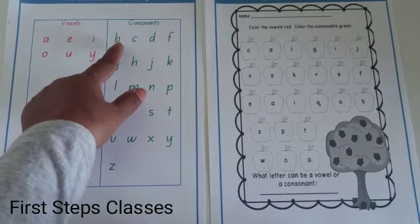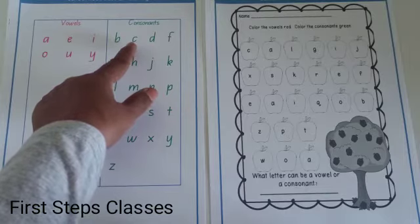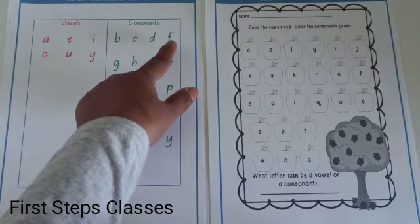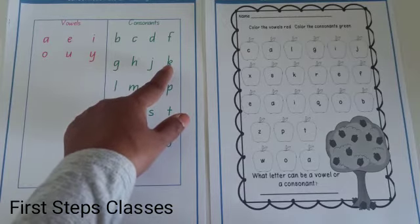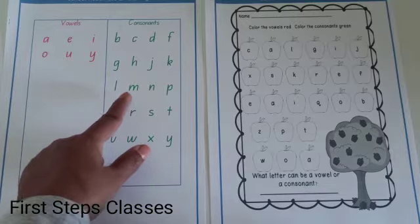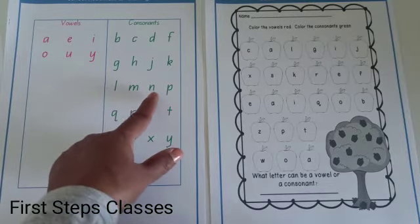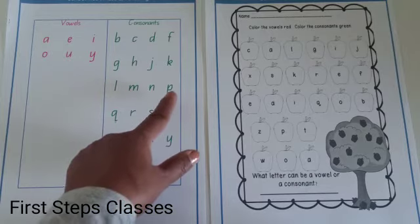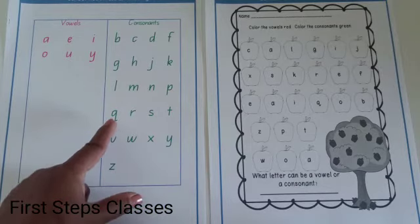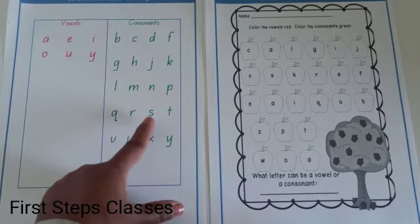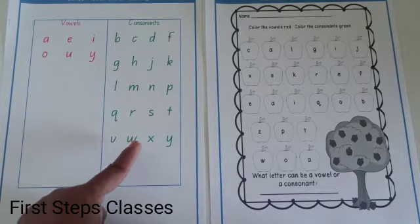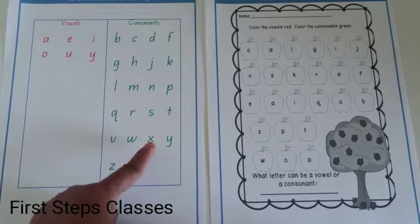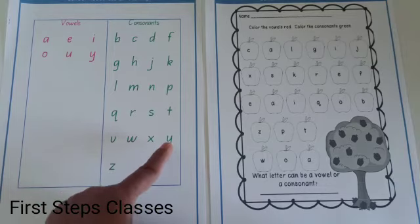Let us look at the consonants. The consonants are: B, C, D, F, G, H, J, K, L, M, N, P, Q, R, S, TH, V, W, X, Y, and Z.